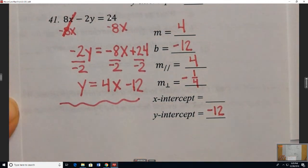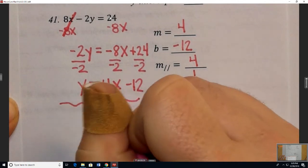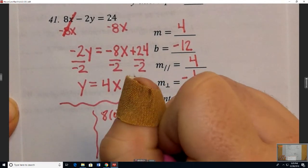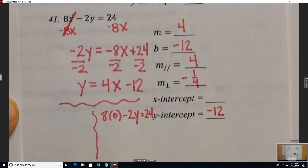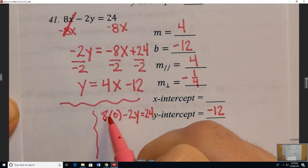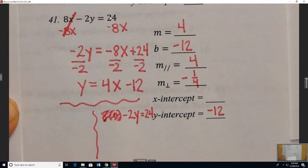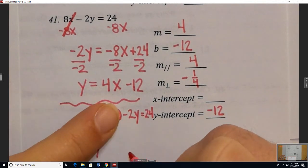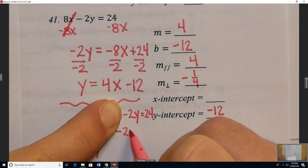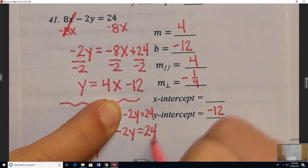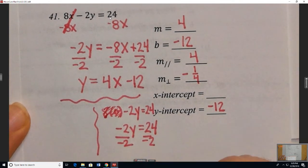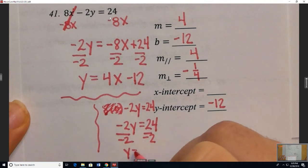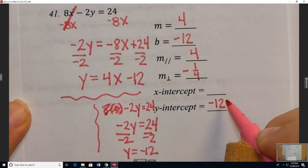In order to find the y-intercept, it was the value of y when x is 0. And so we would take the equation, plug in a 0 for x, and 0 times anything is going to make this part go away. So we talked about you can almost just cover that and solve the remaining problem. It's just solving this part. And to do that, we need to divide by negative 2, and we get y equals negative 12.